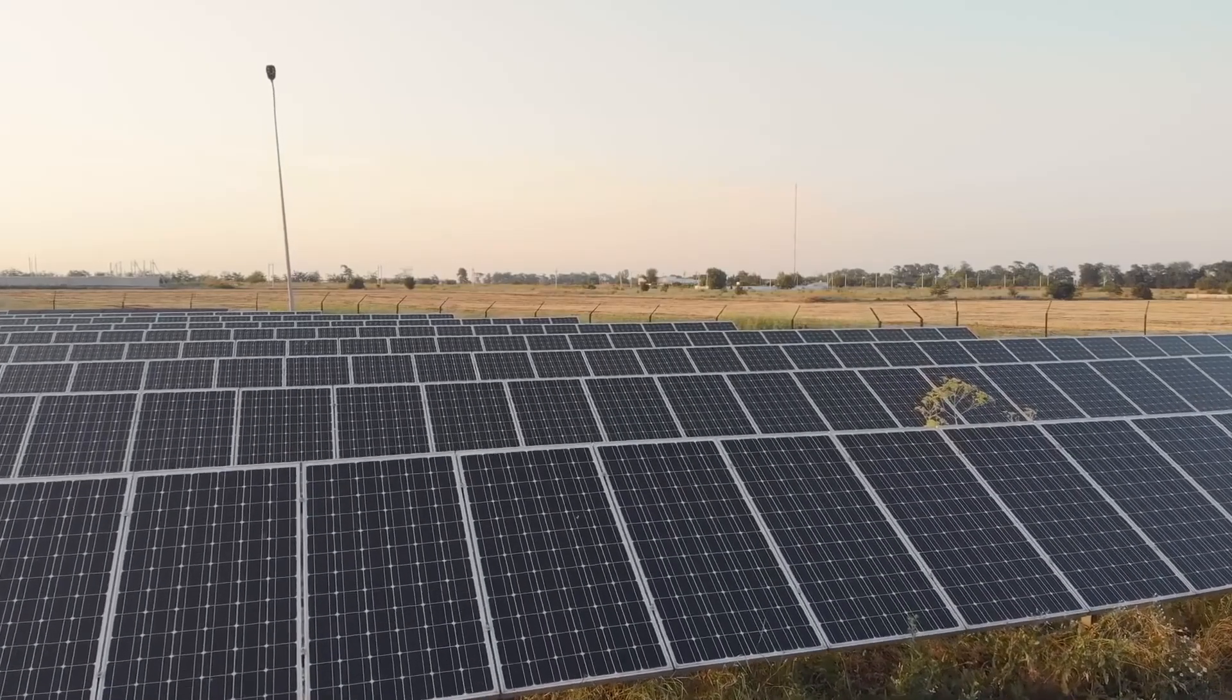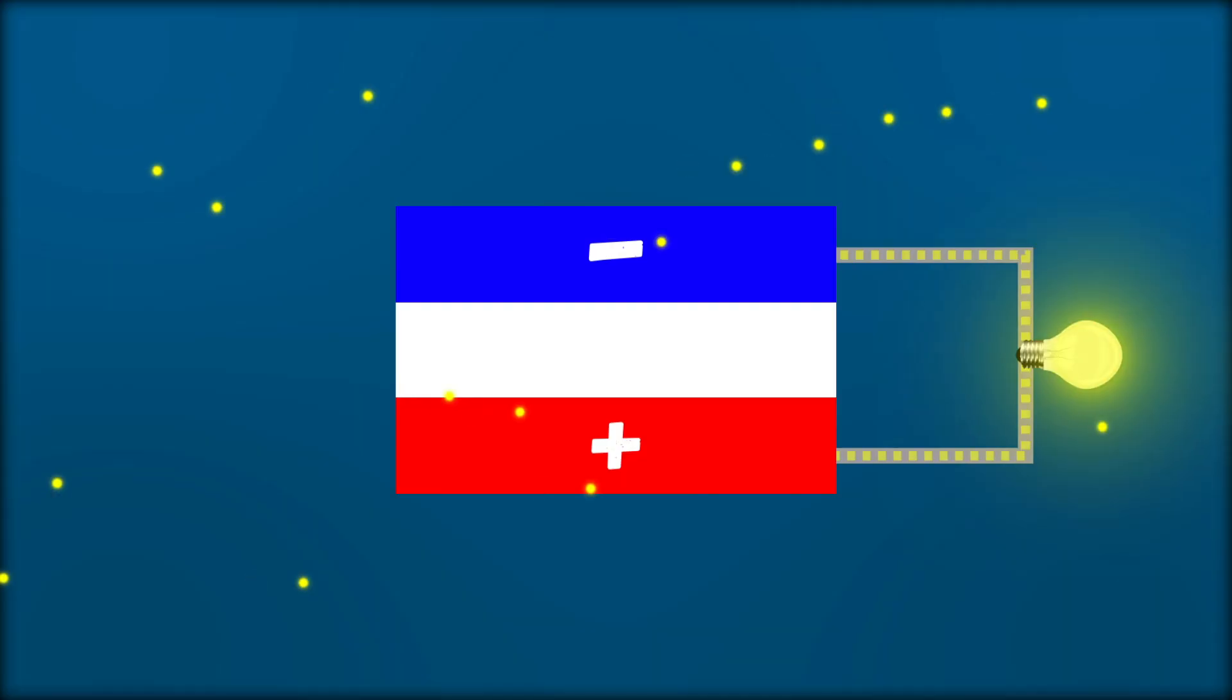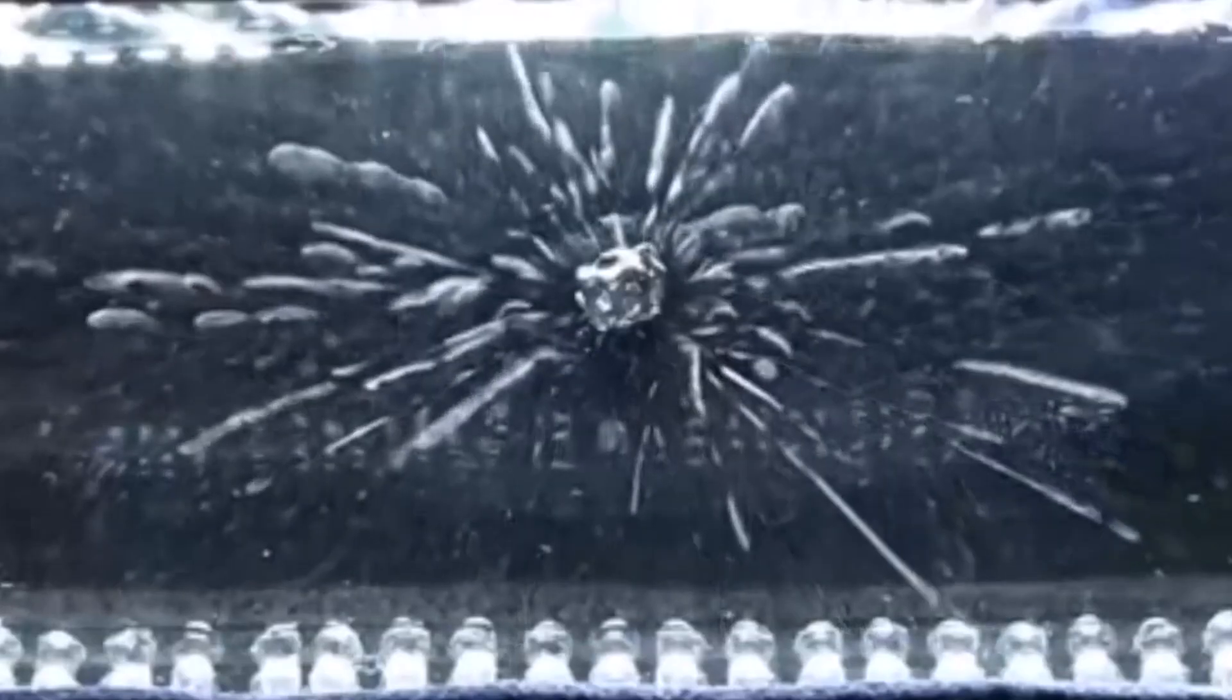If a photovoltaic cell needs sunlight to function, a beta-voltaic cell does not. It is sufficient to place a piece of material undergoing beta decay next to the cell. And the device will generate an electric current.